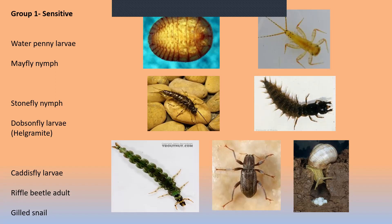In the center left, we have the stonefly nymph, another semi-aquatic creature. Next to it is the dobsonfly larvae, also known as a hellgramite — although they start tiny, they can get quite large and can be used live as fish bait. On the bottom left, the caddisfly larvae — caddisflies are another favorite of trout. In the middle, the adult riffle beetle lives in rocky and gravelly stream areas where water moves swiftly. And on the far right, gilled snails.